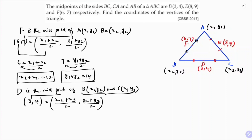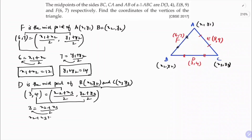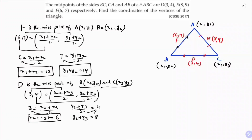Equating abscissa with abscissa and ordinate with ordinate: 3 equals x2 plus x3 by 2. Cross-multiplying gives x2 plus x3 equals 6. Similarly, y2 plus y3 by 2 equals 4, so y2 plus y3 equals 8.